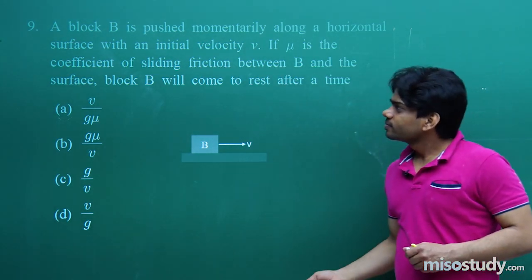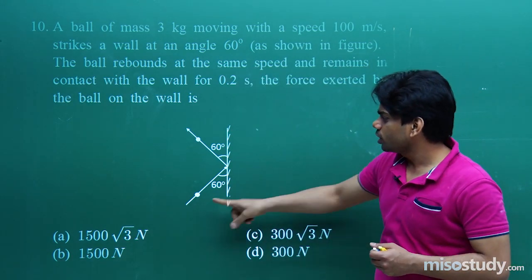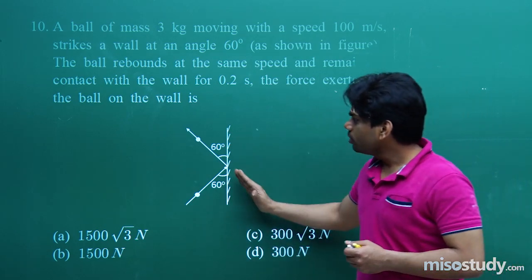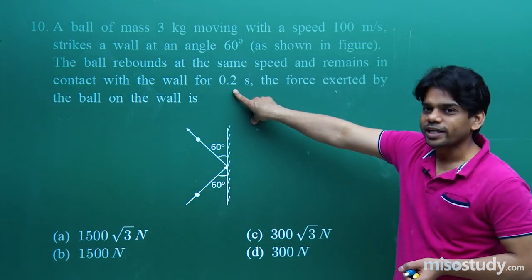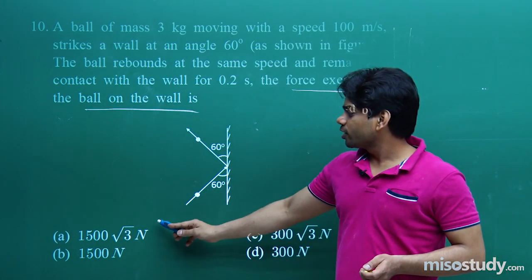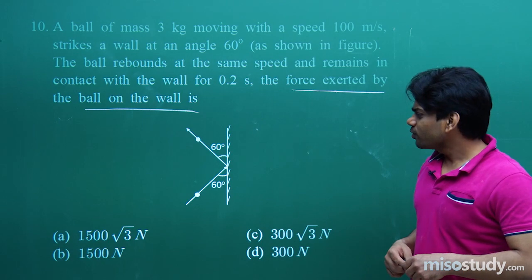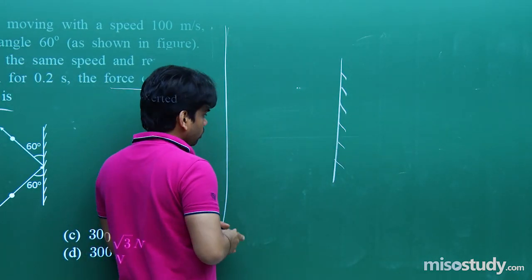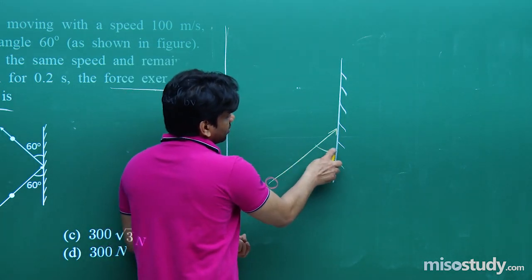Next, question number ten. A ball of mass 3 kg moving with a speed of 100 m/s strikes a wall at an angle of 60°. The ball rebounds at the same speed, remains in contact with the wall for 0.2 seconds, and rebounds at 60° with the wall. The force exerted by the ball on the wall is: A) 1500√3 N, B) 1500 N, C) 300√3 N, D) 300 N.